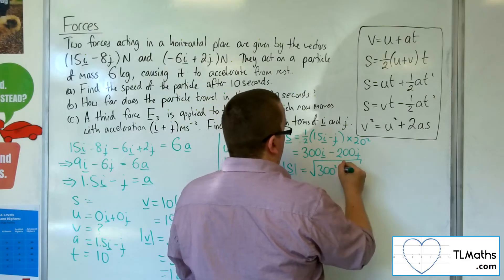Okay, so the magnitude of that will be 300 down 200. So the square root of 300 squared plus 200 squared. So 300 squared plus 200 squared, square rooted, is 360.5551275. So 361 meters to 3 sig fig. So that answers part B.